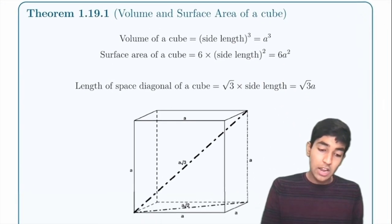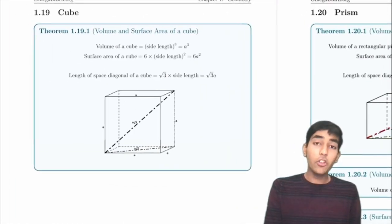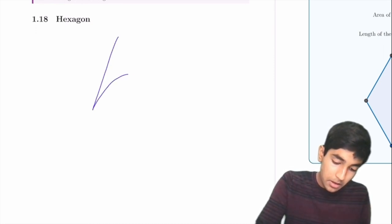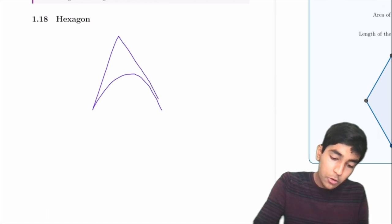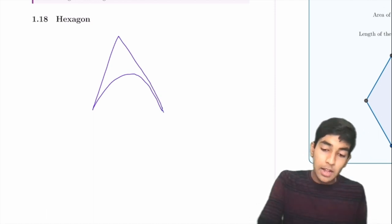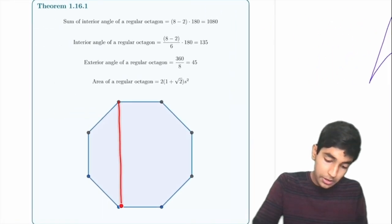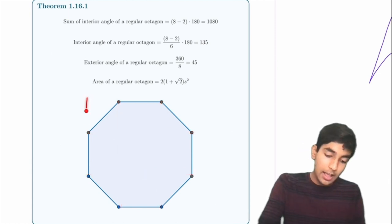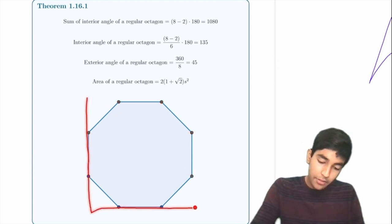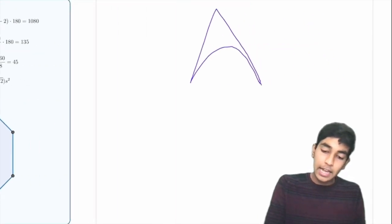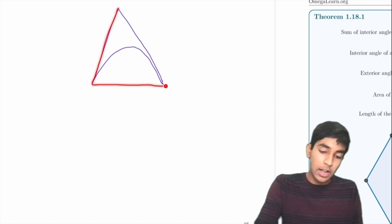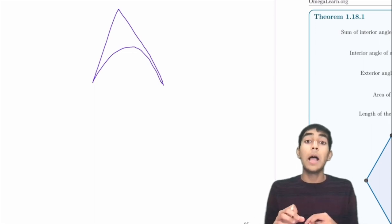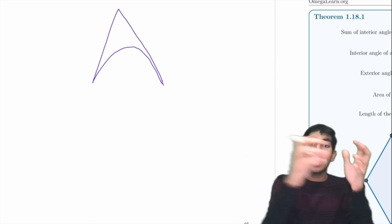Now moving on to 3D geometry. For finding the area of complex shapes, the trick is to break them into regions — like dividing a hexagon into triangles — or to take a larger shape and subtract the extra regions. For example, find the area of the octagon by taking the big square and subtracting the four corner triangles.